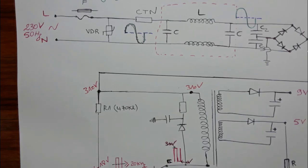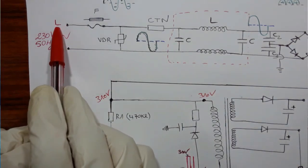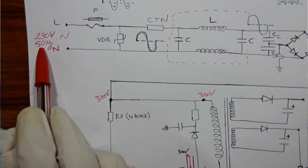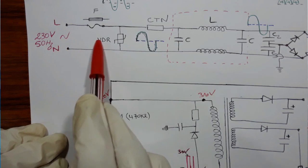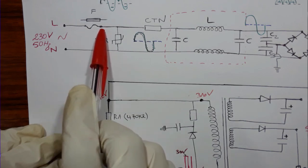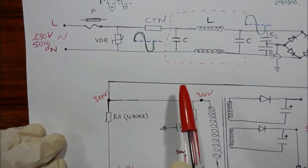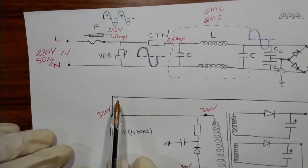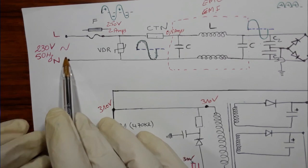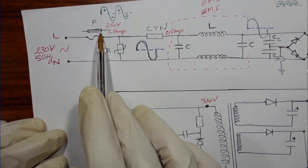We're going to see the flyback circuit diagram. The input here has line and neutral, with an assumed input value of 220-230 volts at 50 hertz — this is AC voltage. The first component is the fuse; you can find the fuse symbol in two formats.